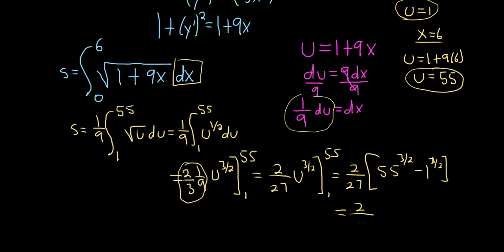So this is just 2 over 27, 55 to the 3 halves minus 1. And if you put this in a calculator,